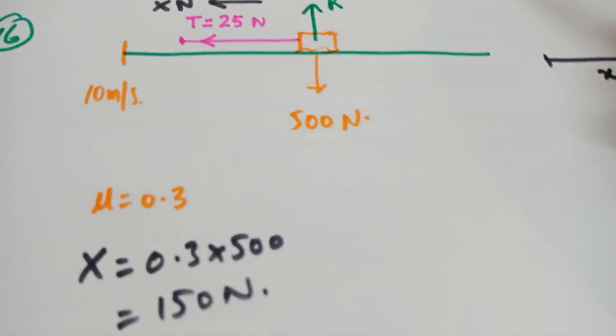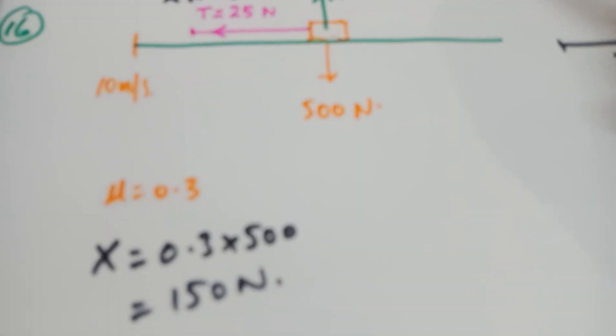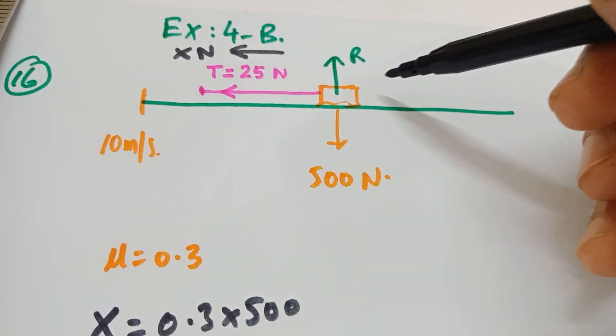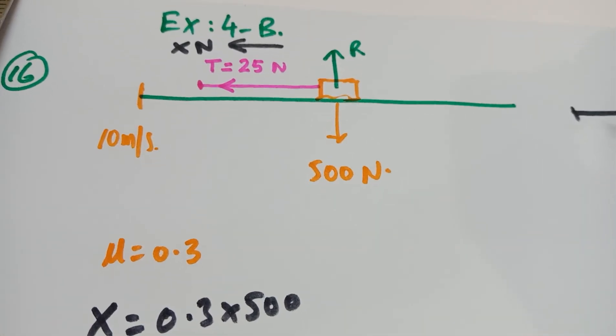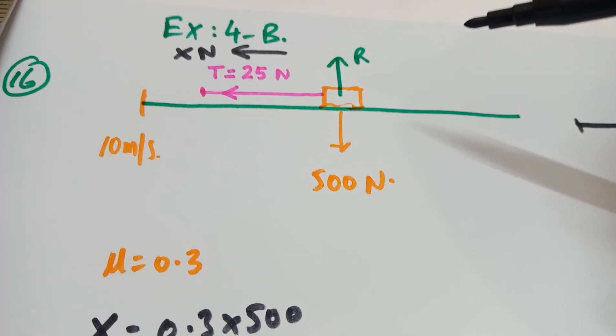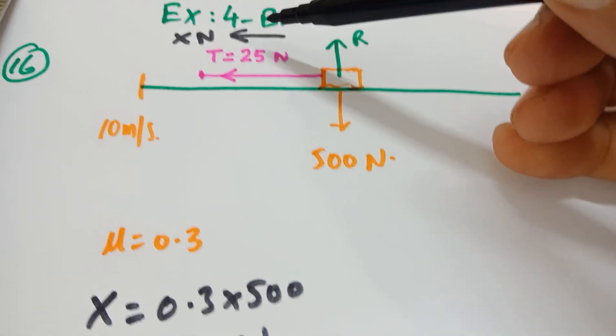Now it says, this box is basically slowing down on the surface, so that means the box is moving in this direction. This is going towards the right side, and there are two forces which are stopping, trying to stop this box. One is obviously the frictional force that we've just calculated, which is 150 N.